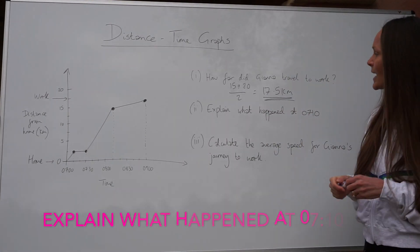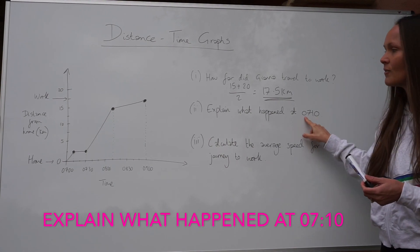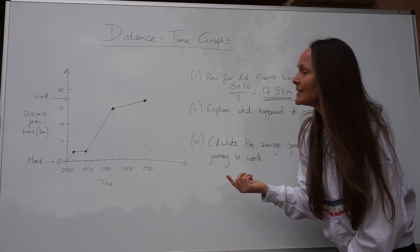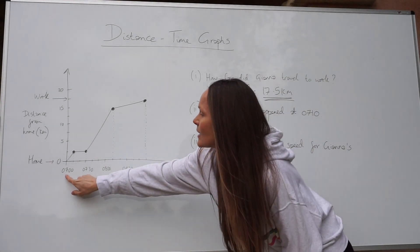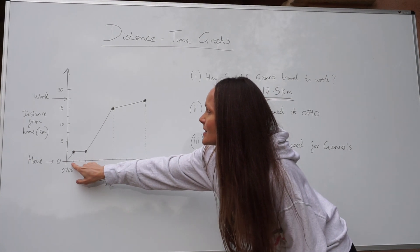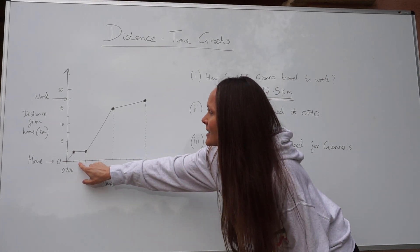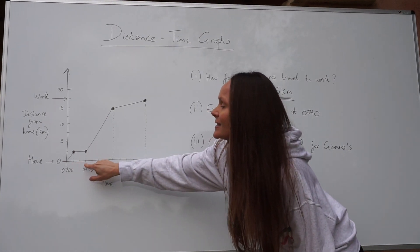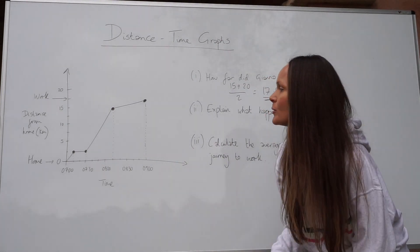Next it says, explain what happened at 10 past seven in the morning. So you need to find out where that time is on the graph. This is seven o'clock and this is half past seven, which means 7.10 is here, 7.20 is here. In fact, each little line is 10 minutes greater than the previous time.